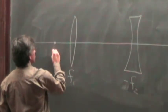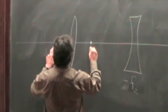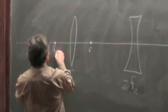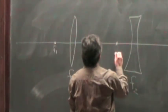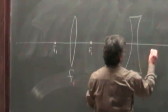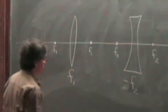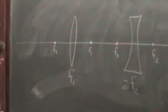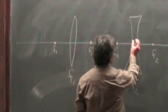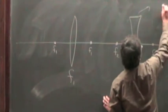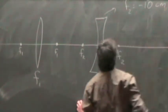So let's say that this one has a focal length, a focal point here and here. And let's say that this one has a focal point here and here. So if the focal length of this optical element is, say, for example, f2 is minus 10 centimeters.